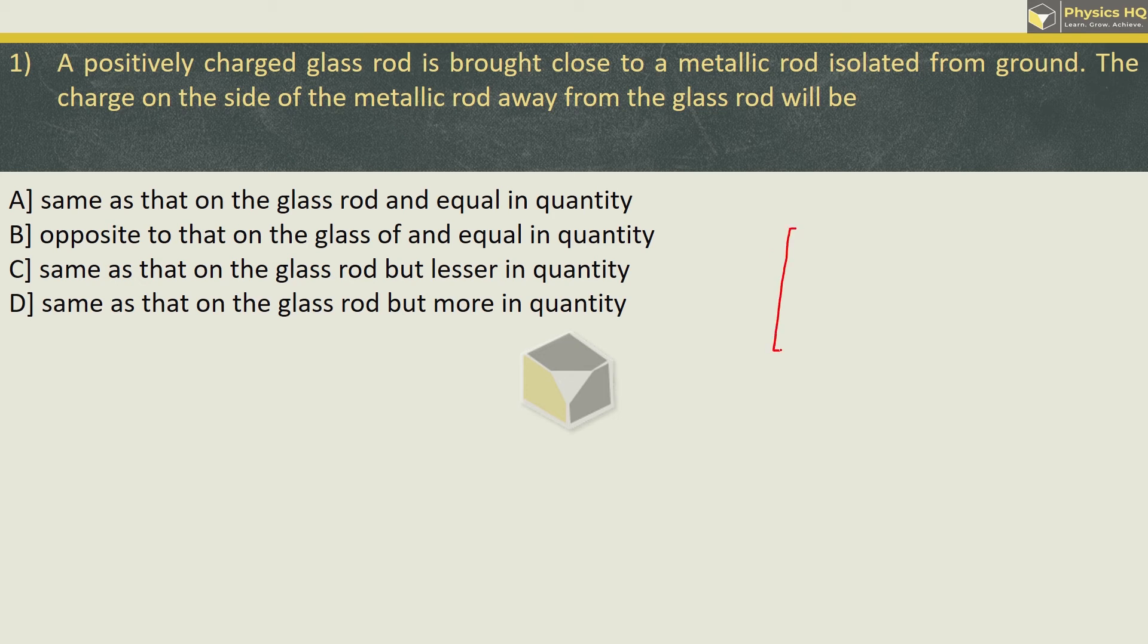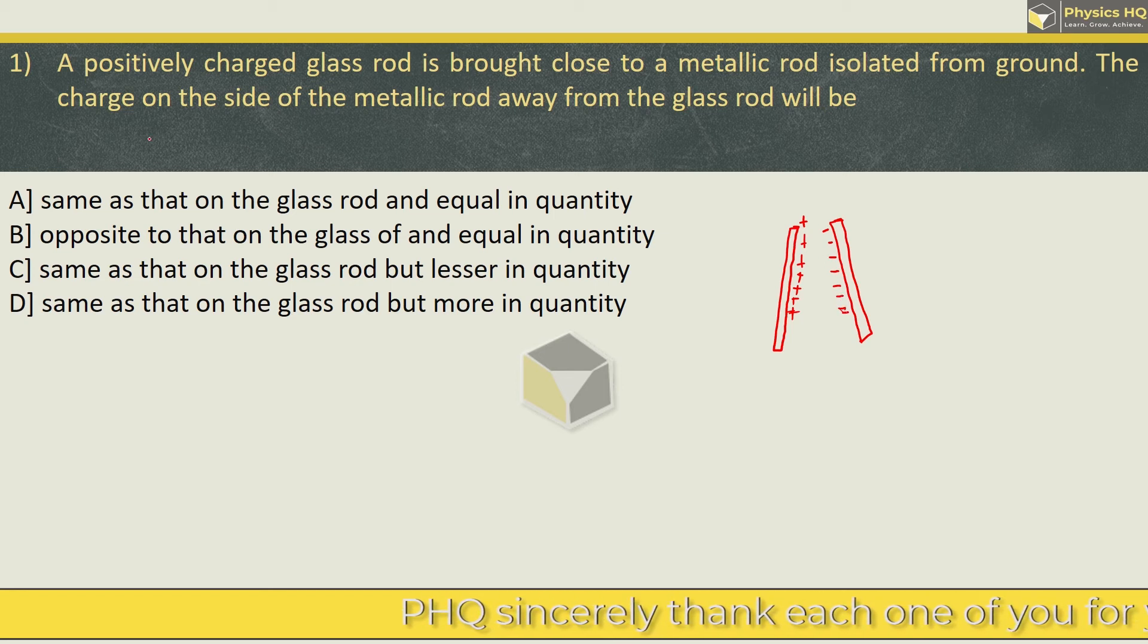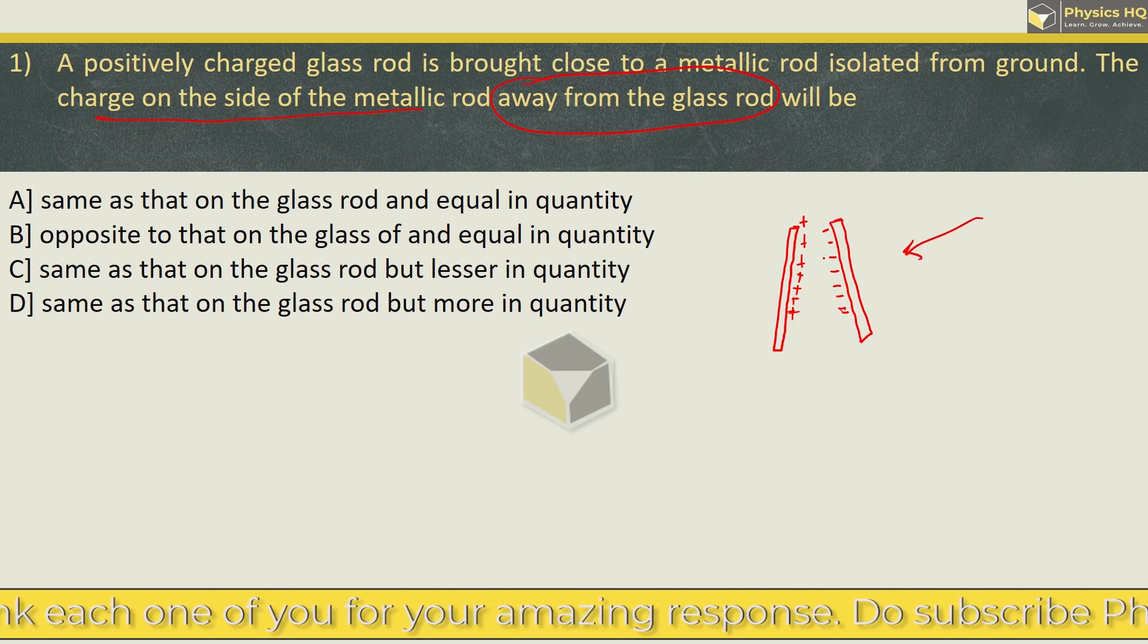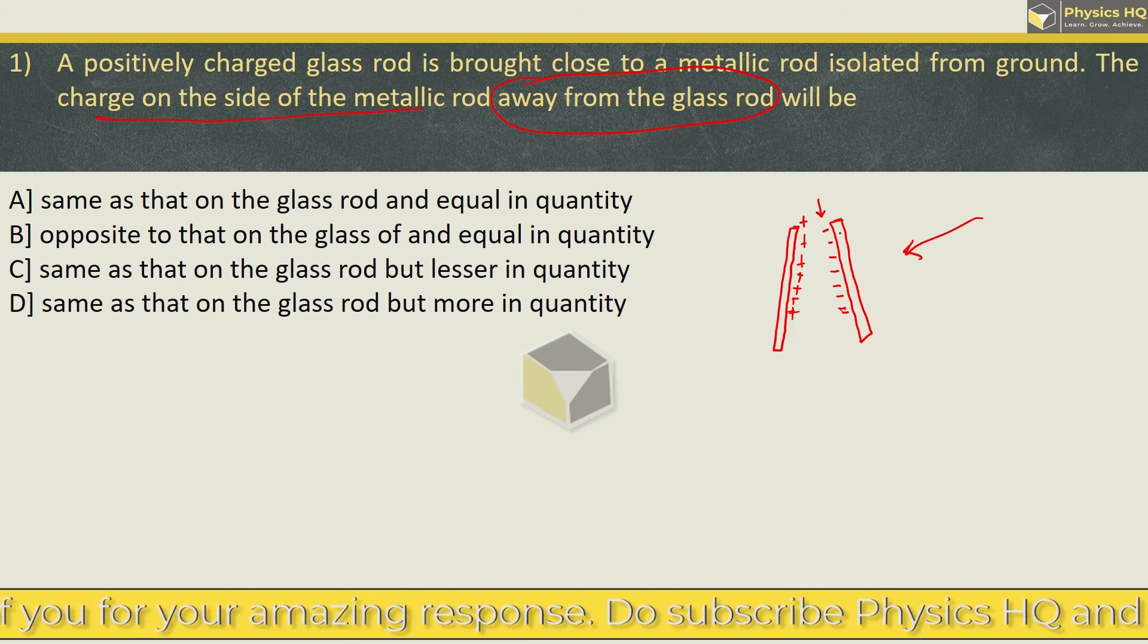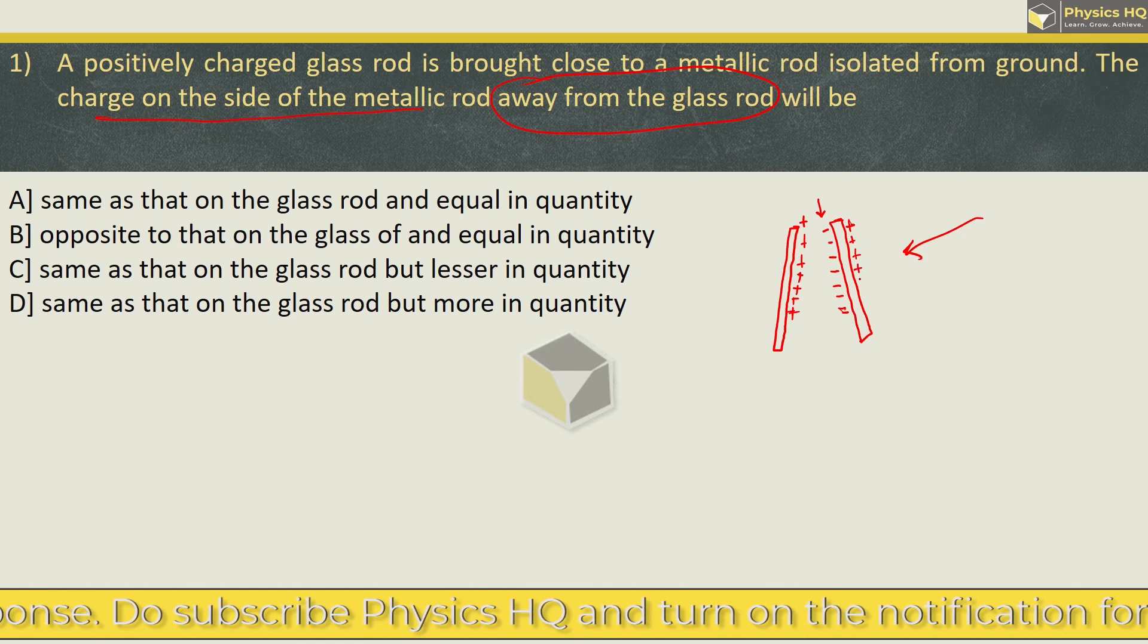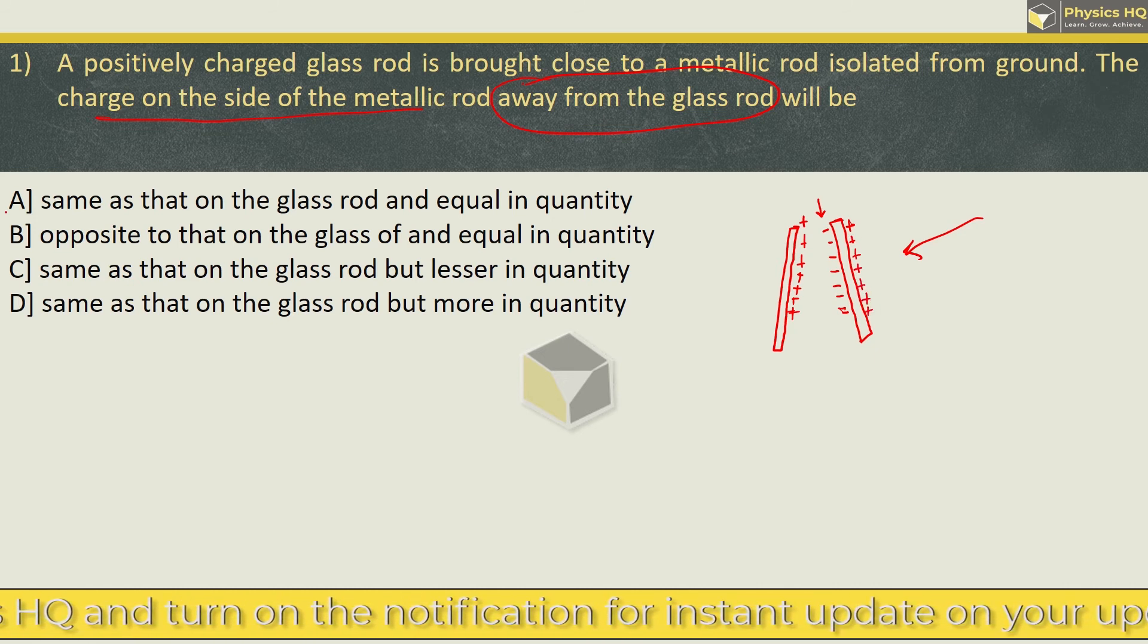Let us say we got a glass rod which is having a positive charge on it. And we are bringing close a metallic rod to it. So this positive charge will form negative charge. And we want the charge on the side of metallic rod which is away from the glass rod.